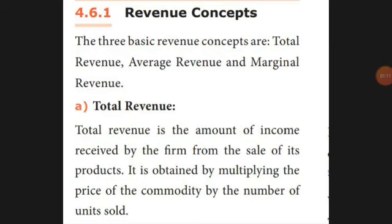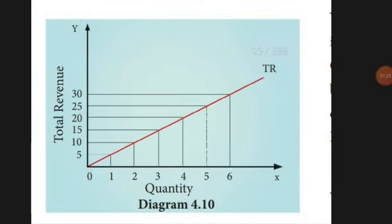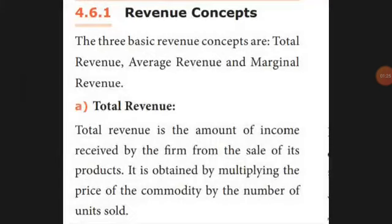Revenue concepts are based on three things: first is total revenue, second is average revenue, and third is marginal revenue. Total revenue is the income received by the firm after selling all its products — whether it sells 500 or 10 products, how much income it earns in total.